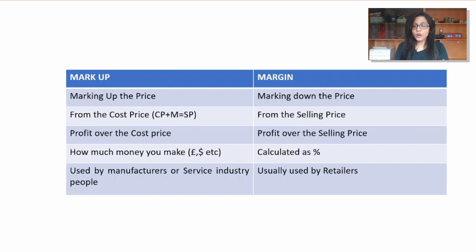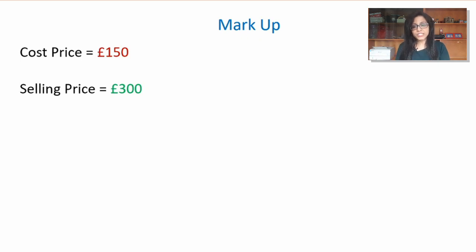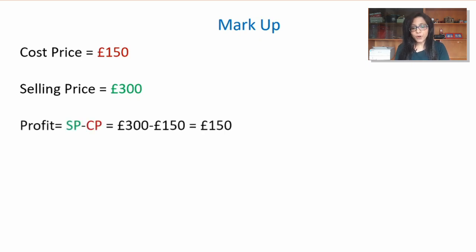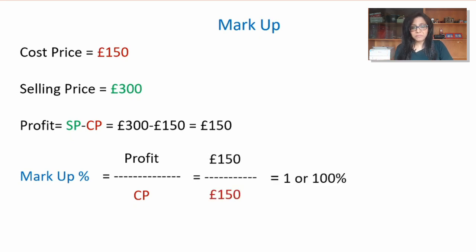Let's do some examples. First, markup: suppose you're buying goods at a cost price of £150 and selling at £300 — you're doubling the price. Your profit is selling price minus cost price: 300 minus 150 equals £150. The markup percentage formula is profit over cost price, so 150 over 150 equals 1, which is 100%. So your markup is 100% when selling at £300.